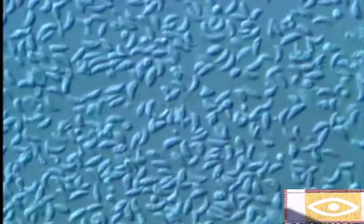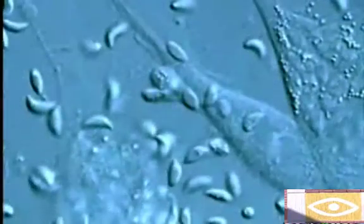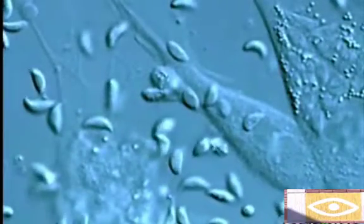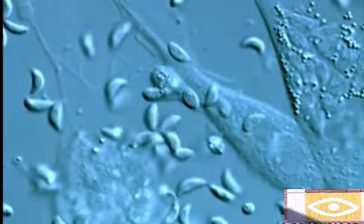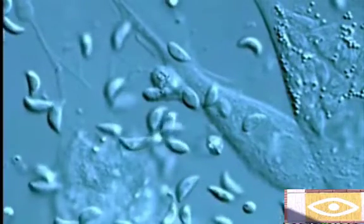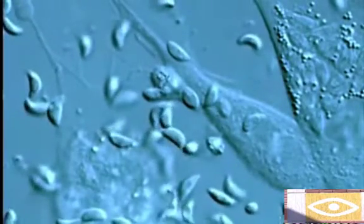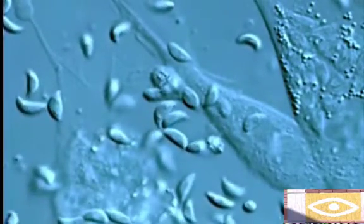Toxoplasma gondii is a protozoan parasite of the phylum Apicomplexa. It is distributed worldwide and can infect all warm-blooded vertebrates, where it develops as an obligatory intracellular parasite.